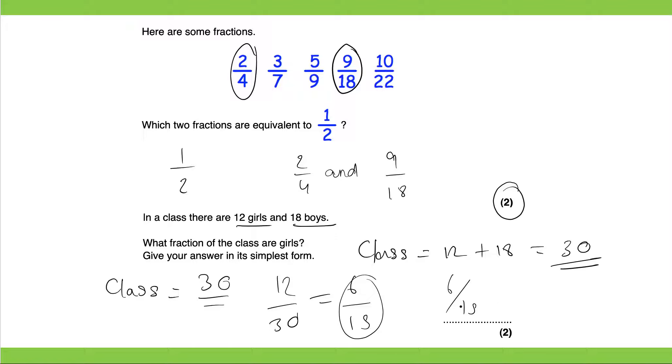Sorry, six fifteenths can be simplified even further. Divide it by 3 which will get you 2 and divide the bottom by 3 which will get you 5. It would be two fifths.